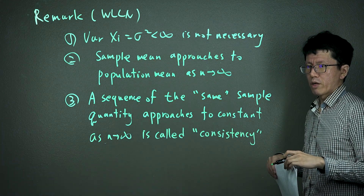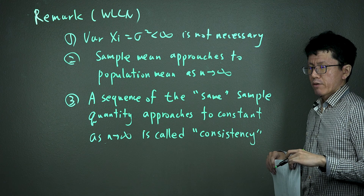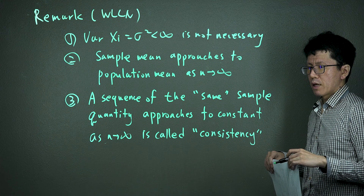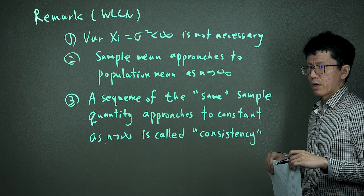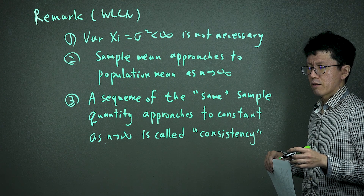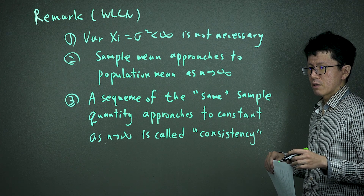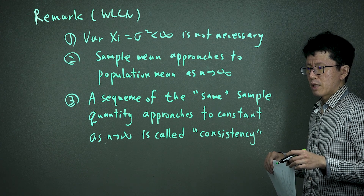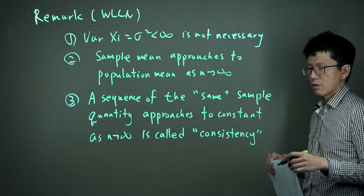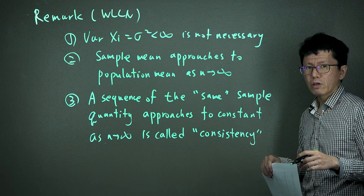When we have a sequence of IID random variables and a statistic based on the random samples approaches a constant as n goes to infinity, this is called convergence in probability. If the sample quantity based on IID random samples converges in probability to a constant, it's called consistency.